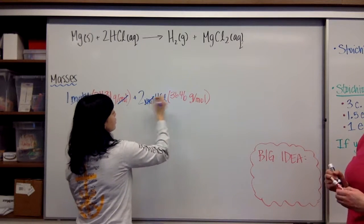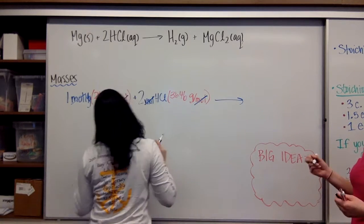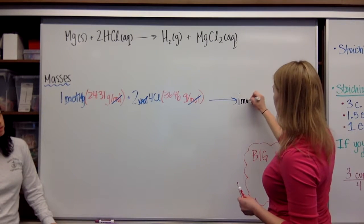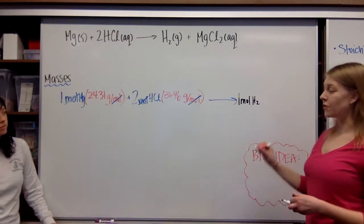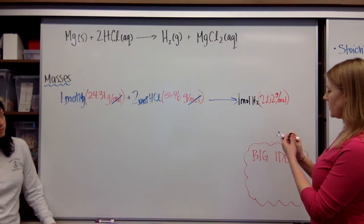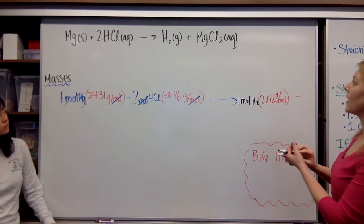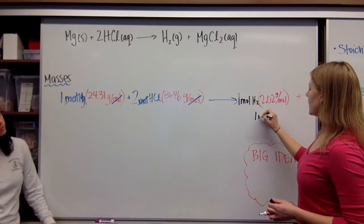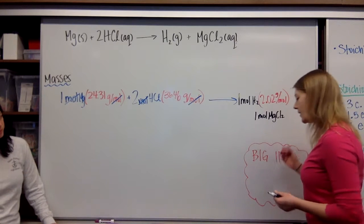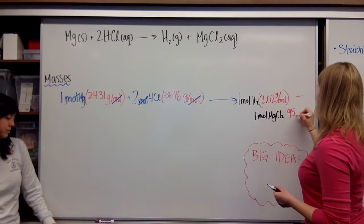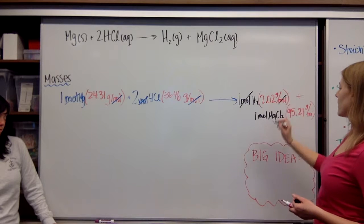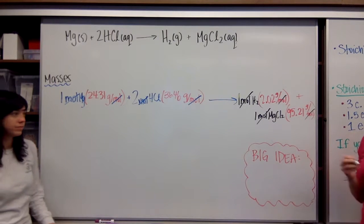And, again, my moles are going to cancel out. This yields, I have one mole of H2. And my molar mass of H2 from the periodic table is 2.02 grams per mole. And I'm going to go down here a little bit. I have one mole of MgCl2. And my molar mass of MgCl2 from the periodic table is 95.21 grams per mole. And just like in the reactants, the moles cancel out. And we're just going to be left with grams.